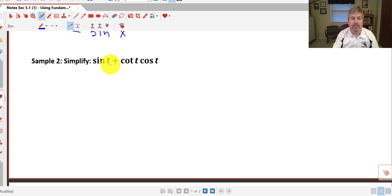Sample 2, I've got the sine of t plus the cotangent of t times the cosine of t. I'm going to go ahead and rewrite cotangent of t as cosine over sine. So cosine of t over sine of t times cosine t. Well, I see here, I've got two cosine t's in the numerator.